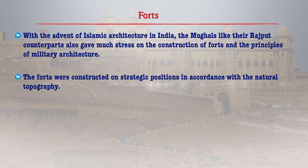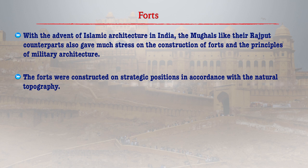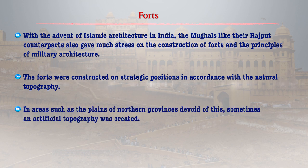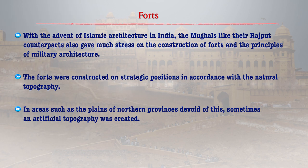With the advent of Islamic architecture in India, the Mughals came up with their own principles of military architecture. Mughal forts were constructed on strategic positions in accordance with the natural topography. In the plains of northern provinces there were fewer challenges, but in hilly areas forts were designed according to regional variations. The use of iron as a construction material was also widely popular, along with stone and mud.